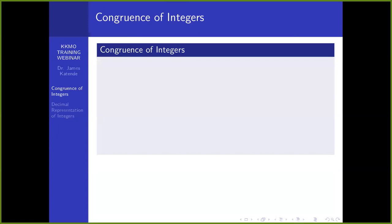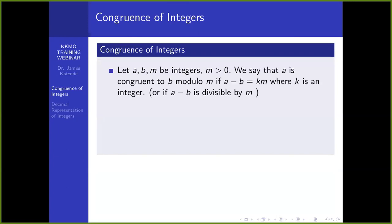So we can move on to the next: we define congruence of integers. If we have three integers A, B, and M, where M is positive, we can say that A is congruent to B modulo M if the difference A minus B is divisible by M. So A minus B is just a multiple of M. When that happens, we say that A is congruent to B modulo M.